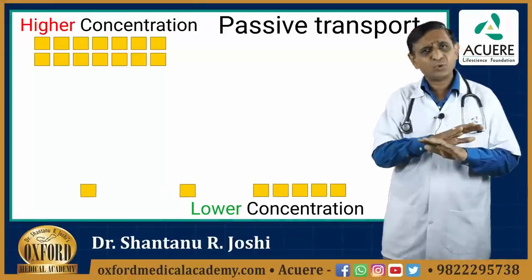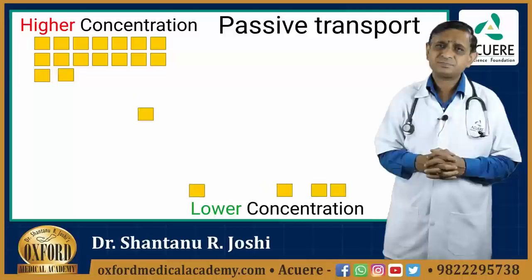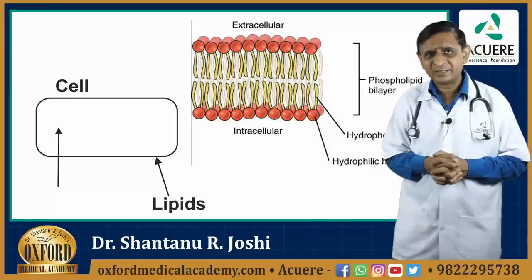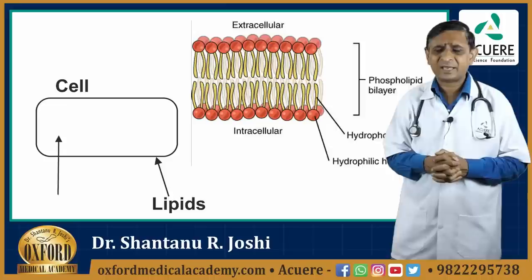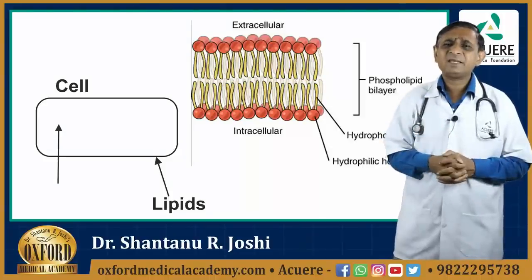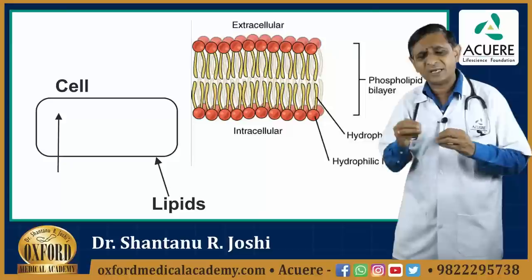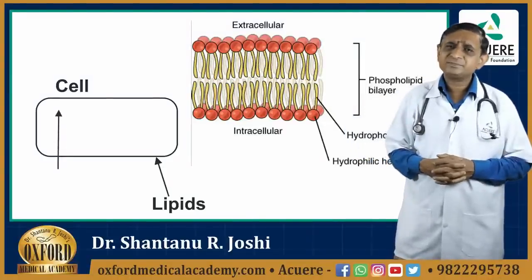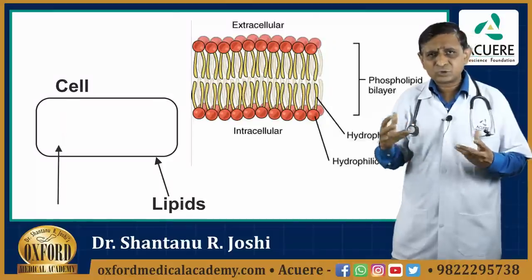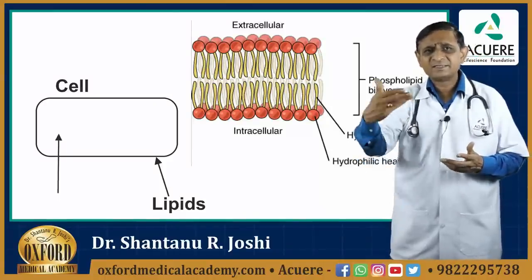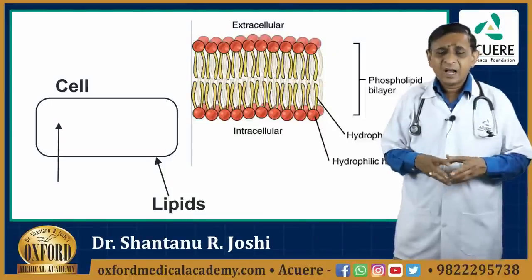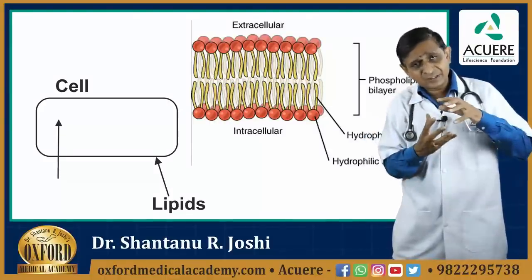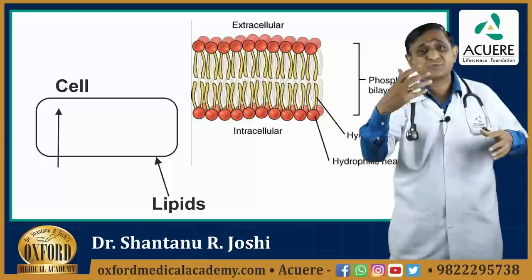Passive transport does not require any form of energy. The lipid soluble substances can easily pass the biological membrane — that is a cell. Cell membrane can be easily pierced by the lipid soluble substances because they can dissolve in the lipid bilayer of a cell and can get transferred to the other side. That is why lipid soluble drugs can easily pass the cell membrane. Higher is the lipid solubility, more will be the diffusion. And higher is the difference in the concentration, faster will be the diffusion.